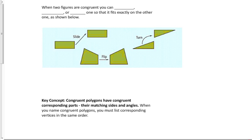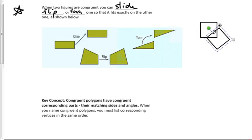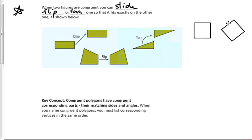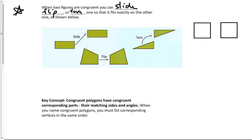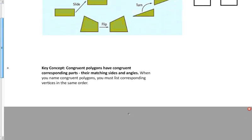One key concept: when two figures are congruent, you can slide, flip, or turn one so that it fits exactly on the other. Here's a good example with a square — if someone said these aren't congruent because one looks like a diamond and one looks like a square, but if you can rotate it so it fits exactly on top, then they are congruent. Don't be fooled by orientation.